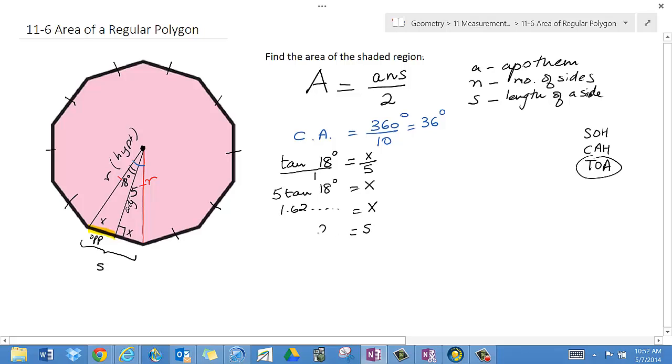To find S, I know S equals 2X. So in my calculator, I already have the number, just say times 2, and I get 3.24 something equals S.